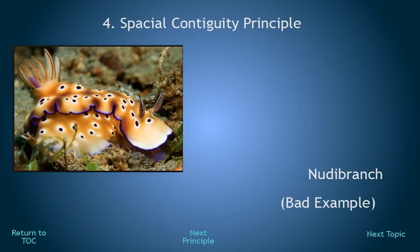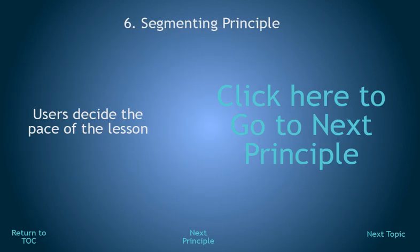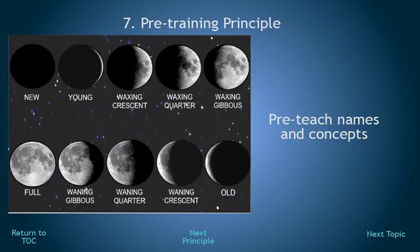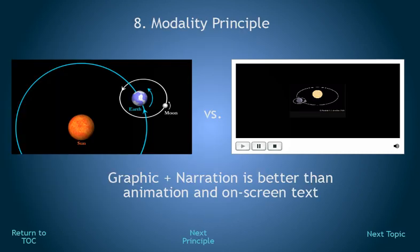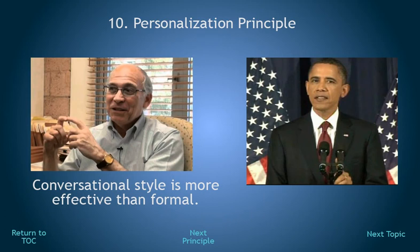Guess that means I should not have included that bit of text. People learn better when words and pictures are near each other. Words and pictures should appear at the same time. Students learn better when they control the pace of the multimedia lesson. People learn better when they know the names and the characteristics of the main concepts. People learn better from graphics and narrations than from animations and on-screen text. People learn better from words and pictures than from words alone.